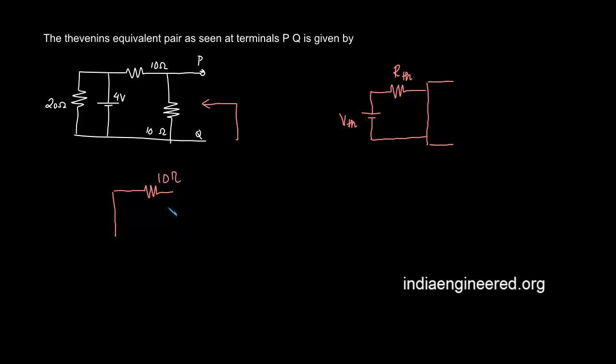We are asked to find out what is the resistance looking here. Now we have 10 ohm and 10 ohm in parallel that will be 5 ohms. So we have found out what is R th, that will be 5 ohms.